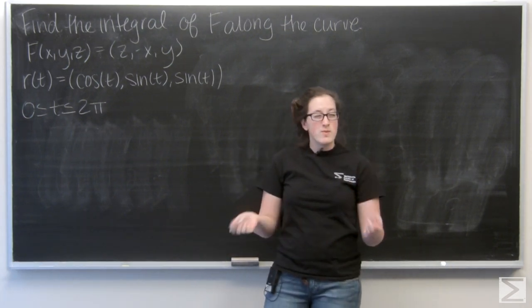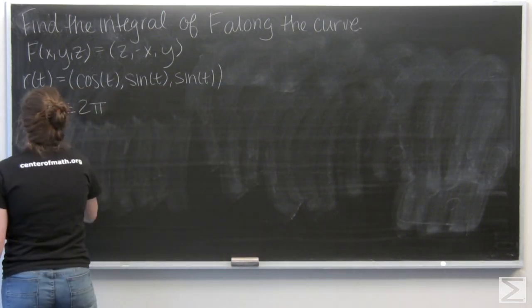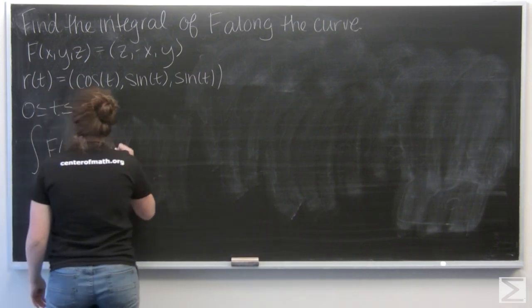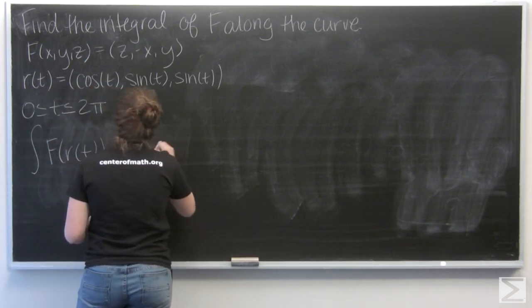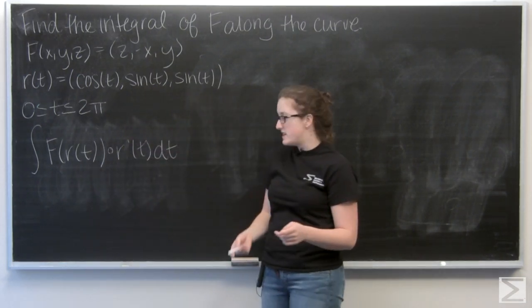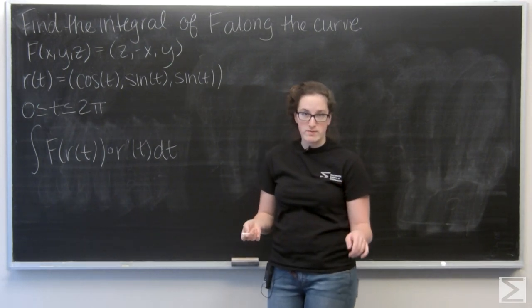So let me write down the general form of this line integral. So I have the integral of f of r of t dotted with r prime of t, and then just integrated with respect to t.